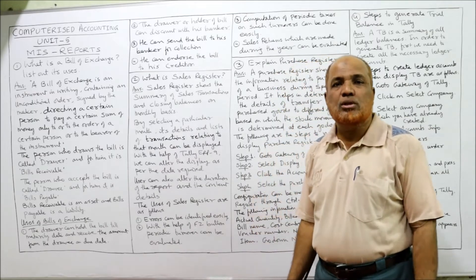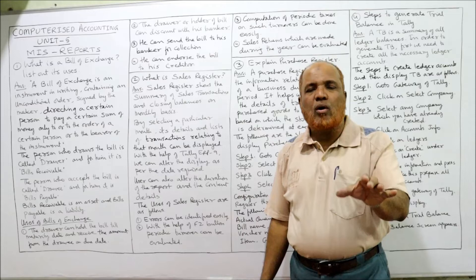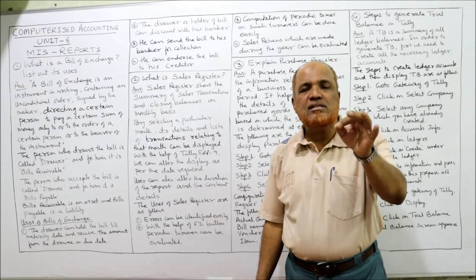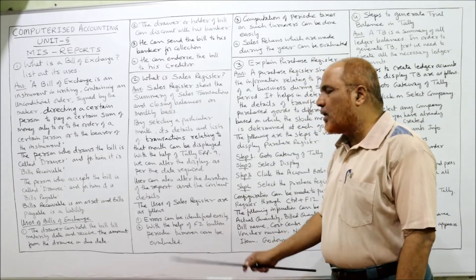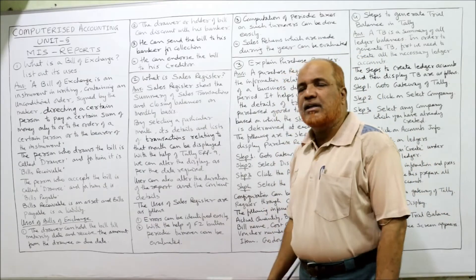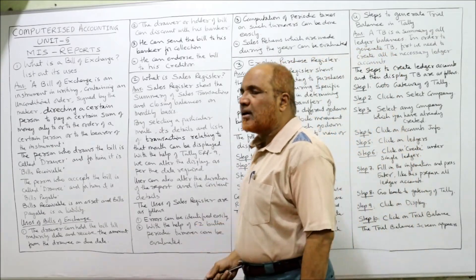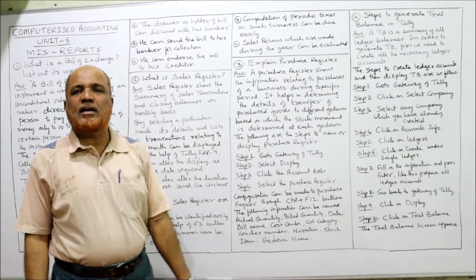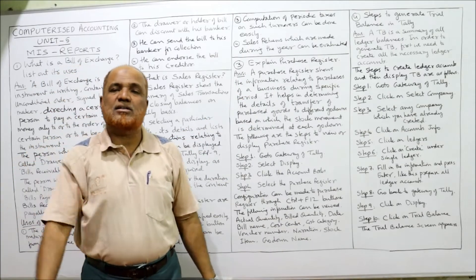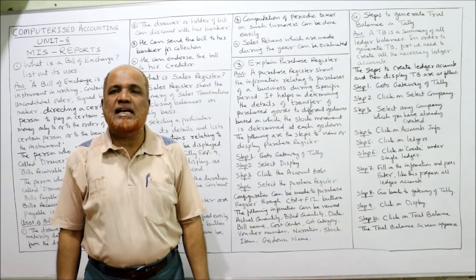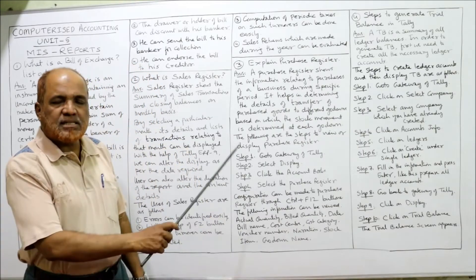The users and advantages of the sales register are: first, errors can be identified easily by reviewing it. Second, with the help of the F2 button, periodic turnover can be evaluated. Third, computation of periodic taxes can be done based on the turnover. Fourth, sales returns made during the year can be evaluated using the sales register.